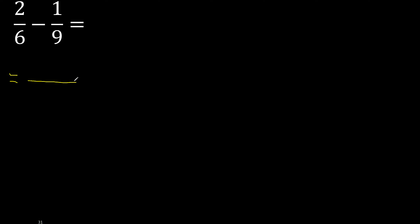First, multiply like this: 9 x 2 = 18, minus 6 x 1 = 6. Here, 6 x 9 = 54.